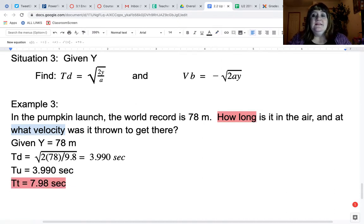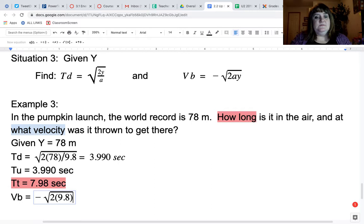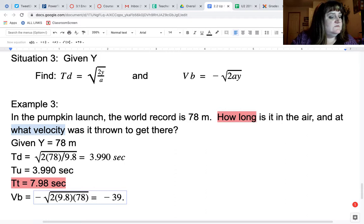Then we have to find the velocity. So VB is equal to the negative square root of 2 times 9.8 times that height of 78, which is equal to negative 39.1 meters per second. The actual decimal answer is negative 39.998, which would round to be 39.100 meters per second.